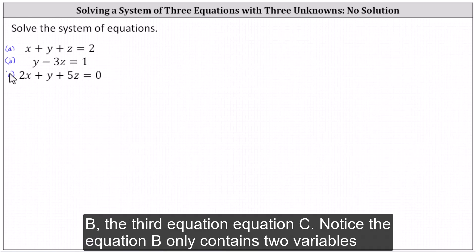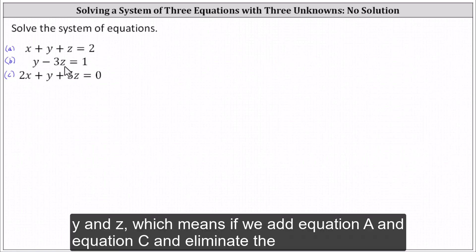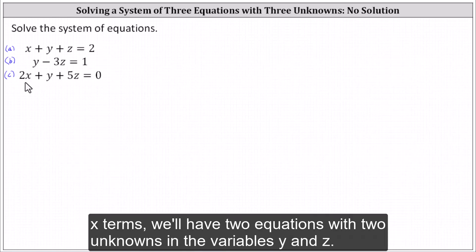Notice equation B only contains two variables, Y and Z, which means if we add equation A and equation C and eliminate the X terms, we'll have two equations with two unknowns in the variables Y and Z.